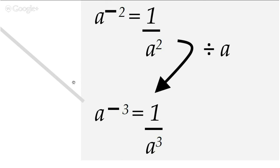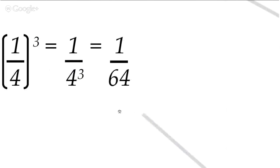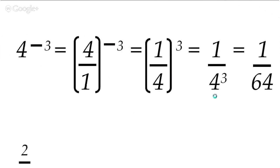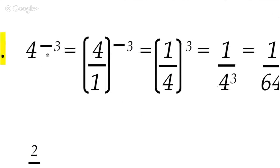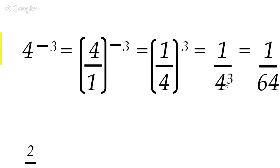And that explains what we were doing in the earlier video when we said four to the power minus three equals one over four cubed — you just find the reciprocal of four to the power of three. Sometimes it's easier to see things in numbers, so I'm just showing you the numbers.